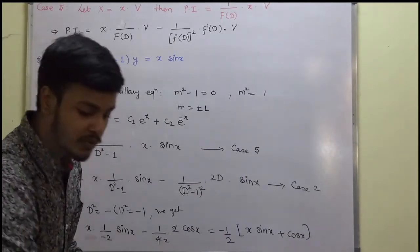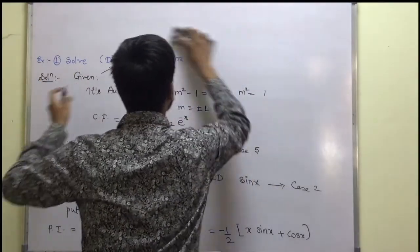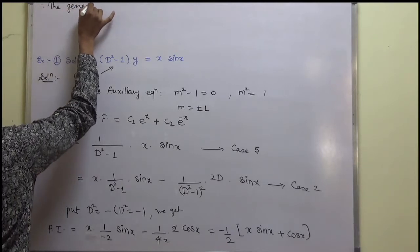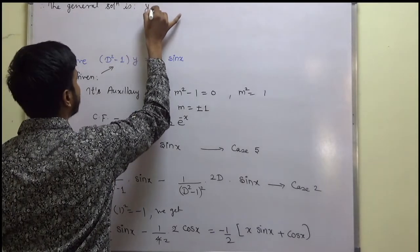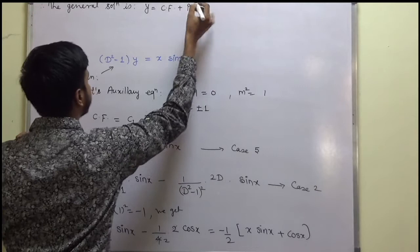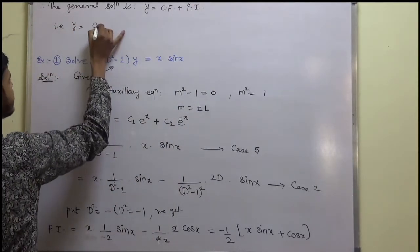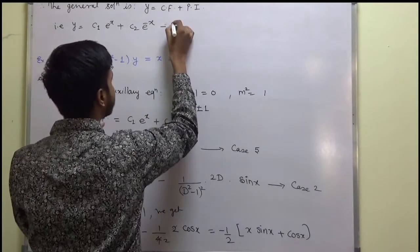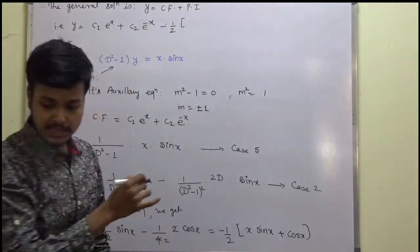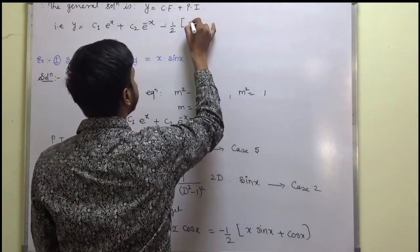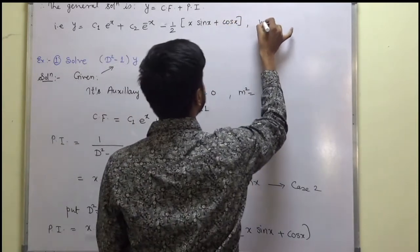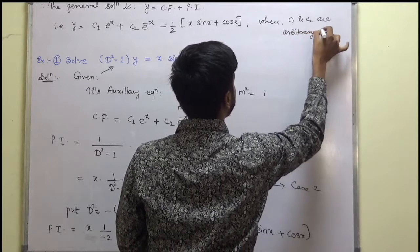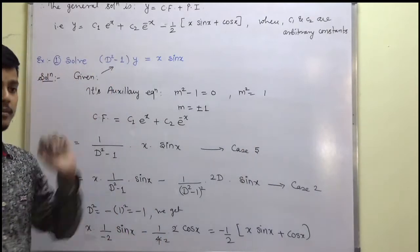Taking −1/2 outside, we remain with x·sin x + cos x. So PI = −(1/2)(x·sin x + cos x). Therefore, the general solution is y = CF + PI, which is y = c₁e^x + c₂e^(−x) − (1/2)(x·sin x + cos x), where c₁ and c₂ are arbitrary constants. This completes the first problem.